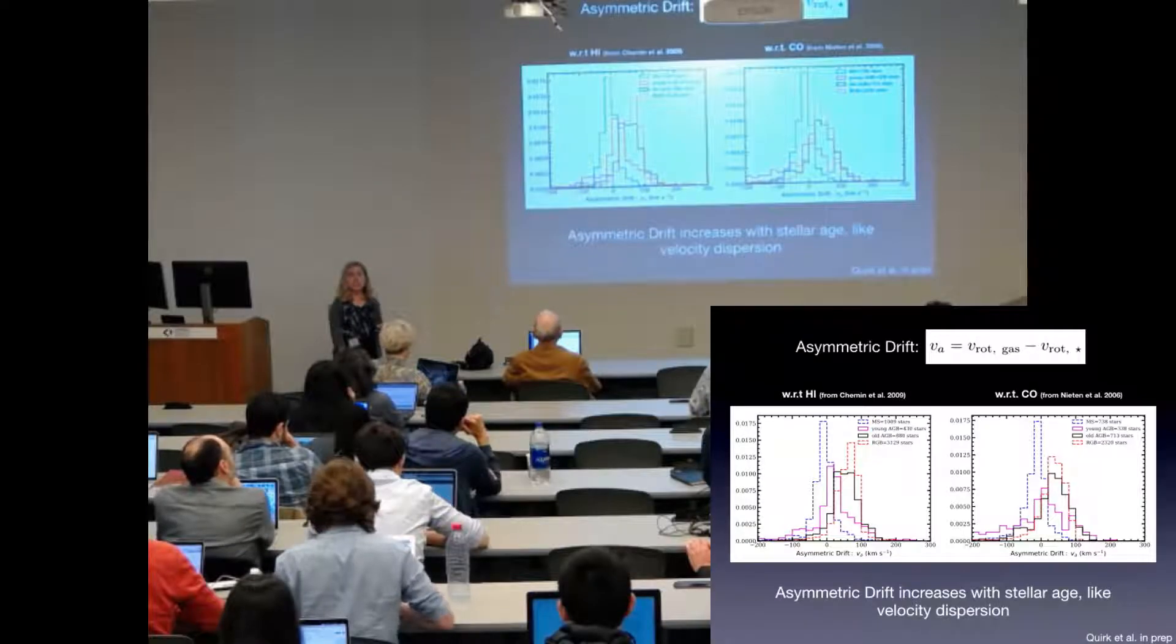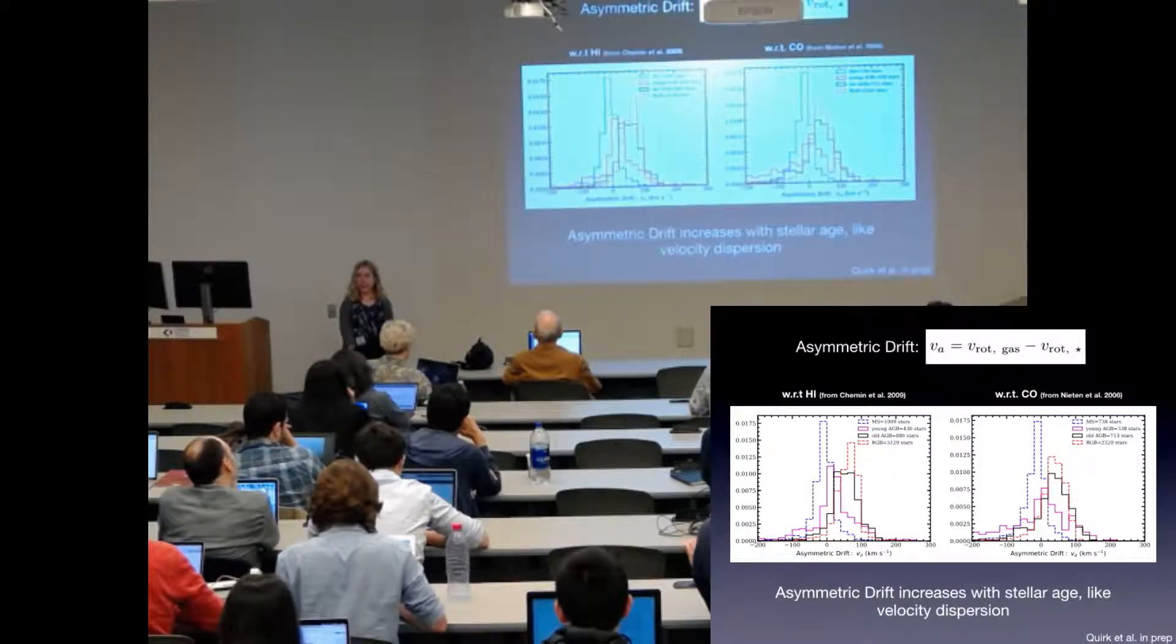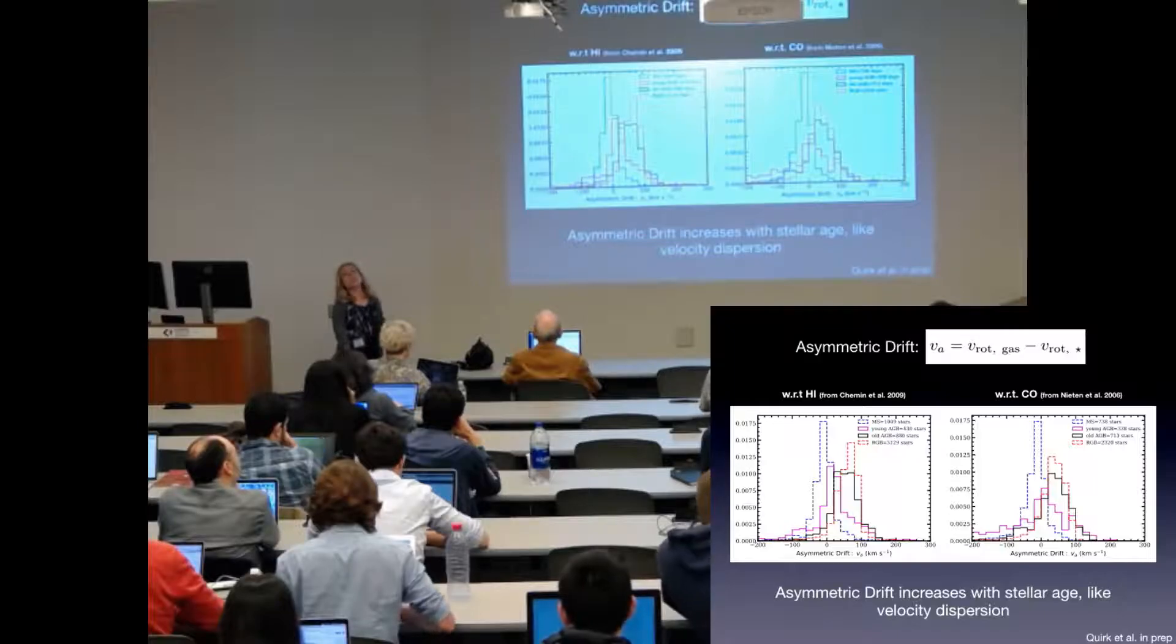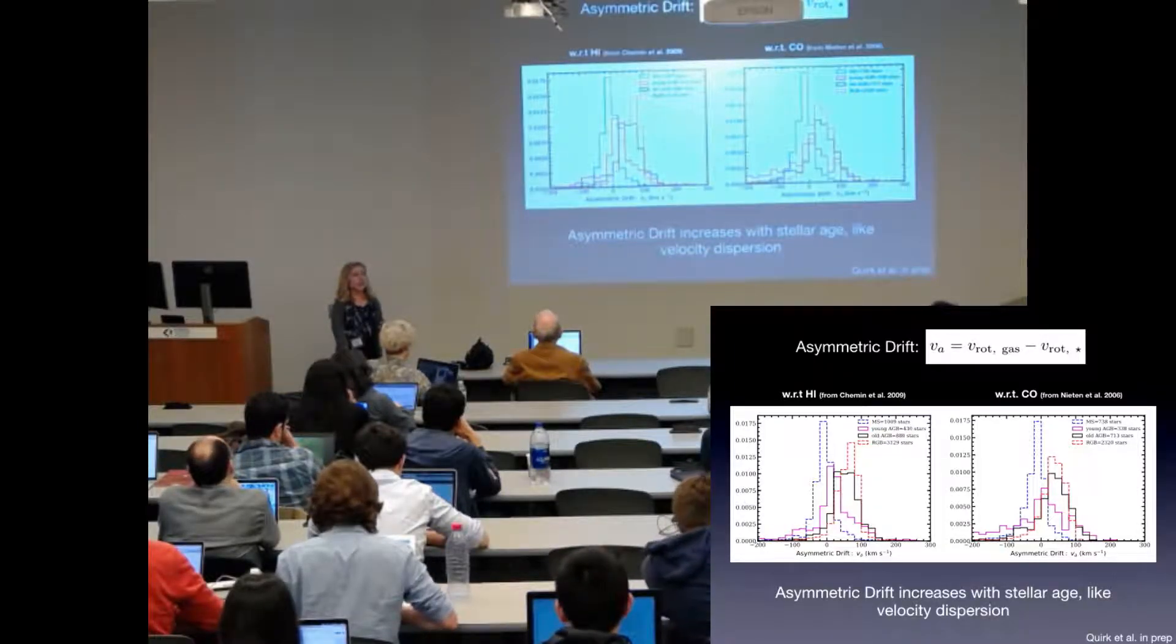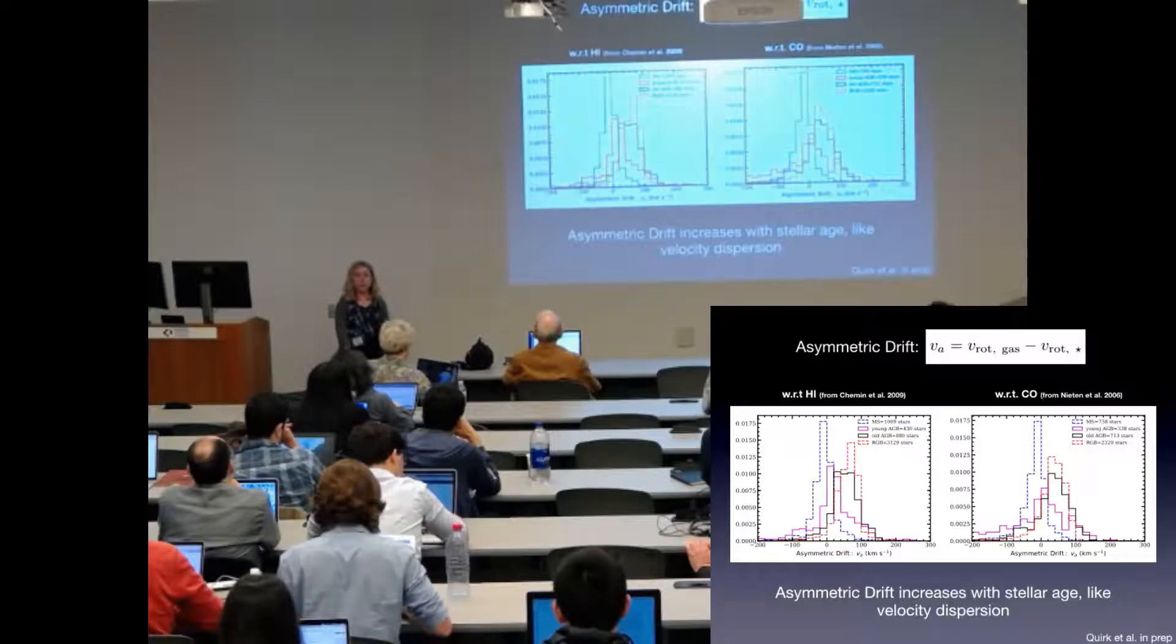So like velocity dispersion, asymmetric drift is a function of stellar age. And I want to make sure that none of the substructure or scatter in the rotation curves is influencing this measure at all, this measurement.